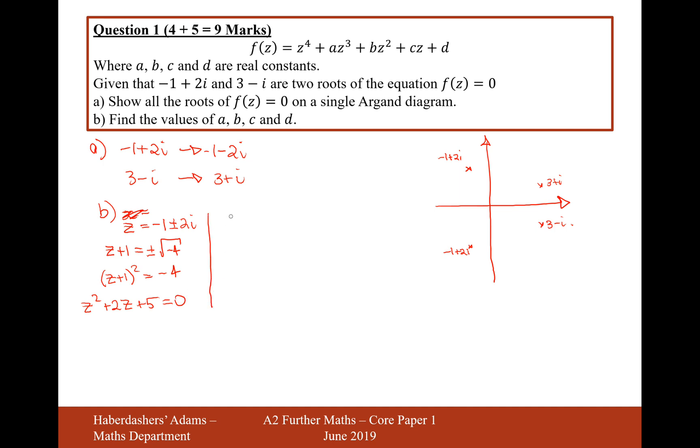Let's do the same process for 3±i. z equals 3±i. Move the 3 to the other side: z-3 equals ±√(-1). Square both sides: (z-3)² = -1. Move everything to the same side: z²-6z+9+1, so z²-6z+10=0.